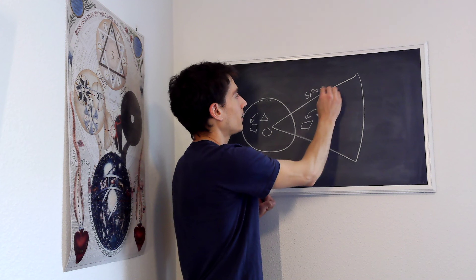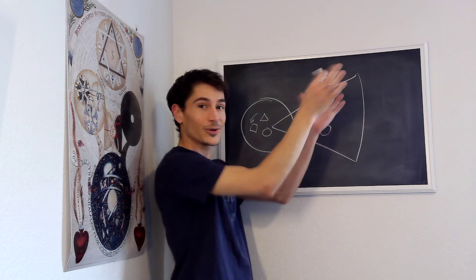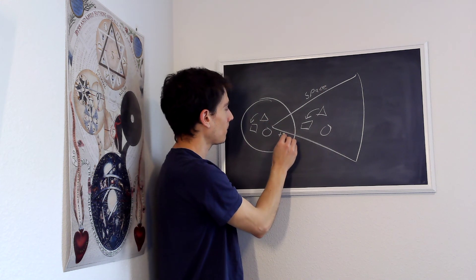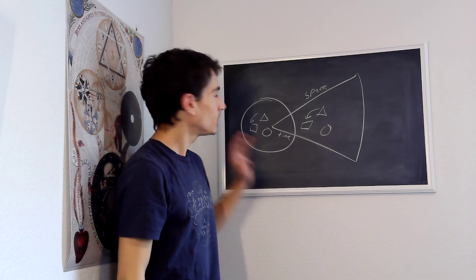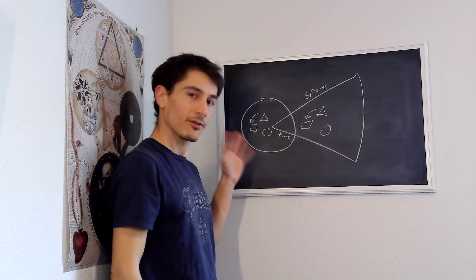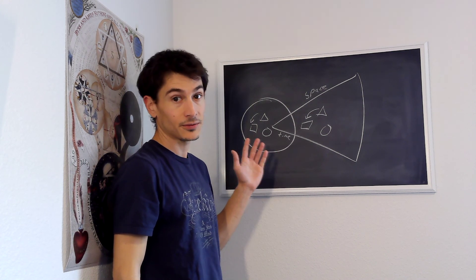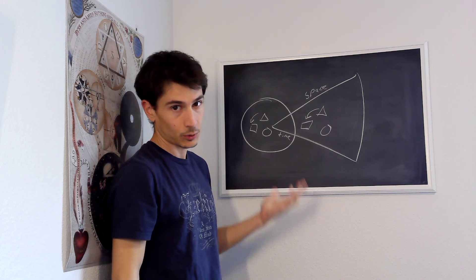This is the realm of phenomena of space or outer intuition and time or inner intuition. This is the picture that Kant leaves us with after the critique of theoretical reason in his book the Critique of Pure Reason.